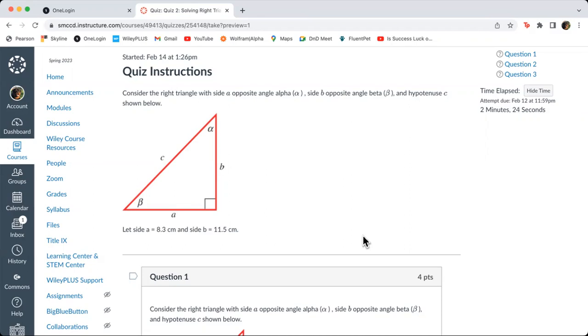On these random examples that have nothing to do with the quizzes, I use this setup. I want angle alpha and beta. Side A will be opposite angle alpha, side B will be opposite angle beta, and side C will be the hypotenuse opposite the right angle. So in this problem, we are given that A is 8.3 centimeters and B is 11.5 centimeters. The three pieces of information we're given are side A, side B, and the right angle.